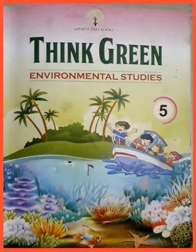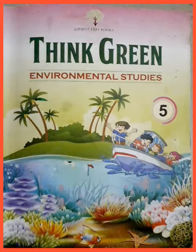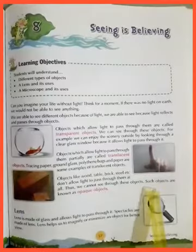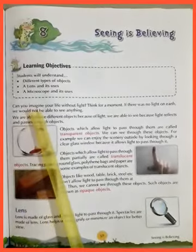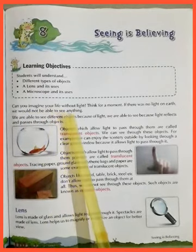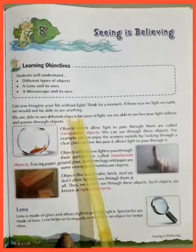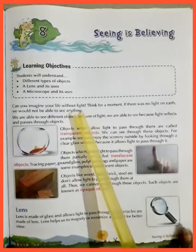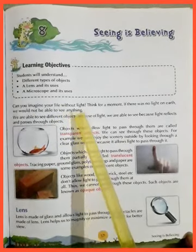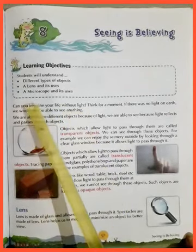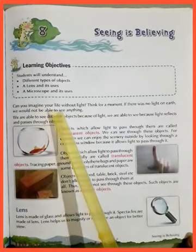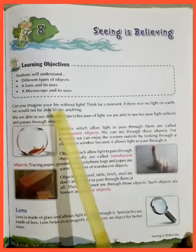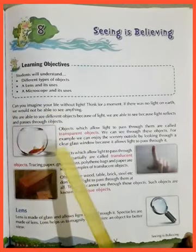Hello everyone. Today we are with EBS book of class 5. There is chapter number 8, 'Seeing is Relieving.' In this chapter, we shall study about different types of objects, a lens and its uses, and a microscope and its uses.